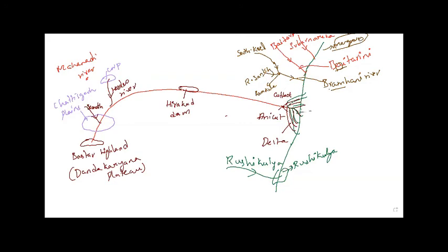And this Mahanadi Delta is famous for rice cultivation and is also prone to cyclones.